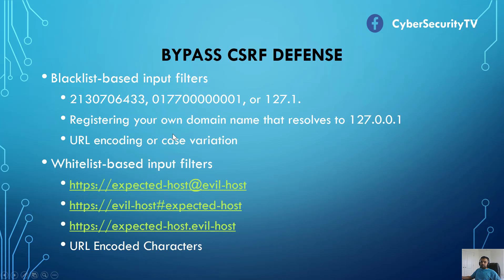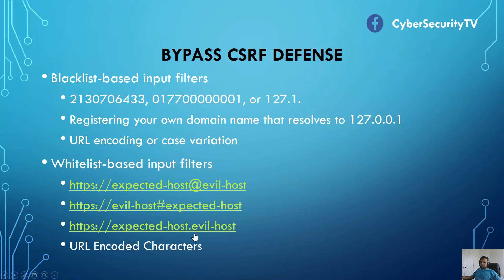Another approach developers use is a whitelist-based input filter, allowing only certain URLs or IP addresses. To bypass that, you can use the @ character and then append your evil host or domain. You can also use a hash and put your domain before it, or use a DNS subdomain rule set like expectedhost.yourhost. You can also URL-encode the characters and send it. There are a bunch of these techniques you can combine to try to bypass whitelist filters.